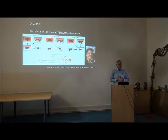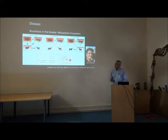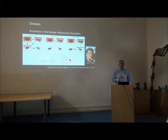Brucellosis is a bacterial disease that manifests as spontaneous abortion in ruminants; it affects humans too, and it's the reason we pasteurize milk. Brucellosis was introduced to the greater Yellowstone ecosystem in the early part of the 20th century with cattle brought in to provide milk to tourists at the lodge in Yellowstone.